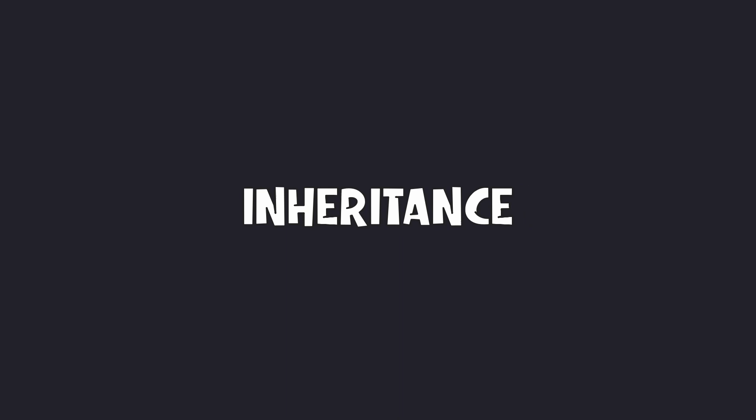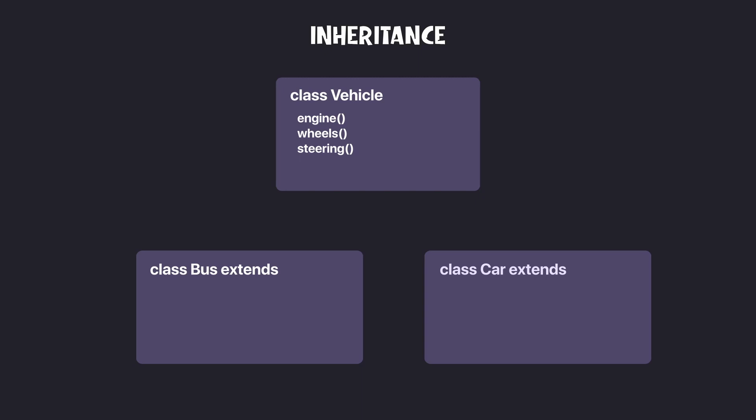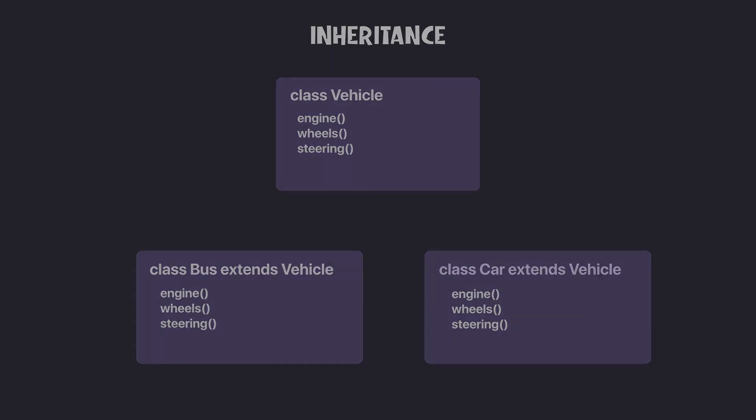Composition is a pattern and it solves problems that the inheritance pattern cannot. A quick recap: inheritance is basically when you have a base class and some other classes extending to the base class that now have access to the public methods and properties of the base class. Composition is not a total replacement for inheritance. We'll talk about when to use each, but first let's understand composition with an example.